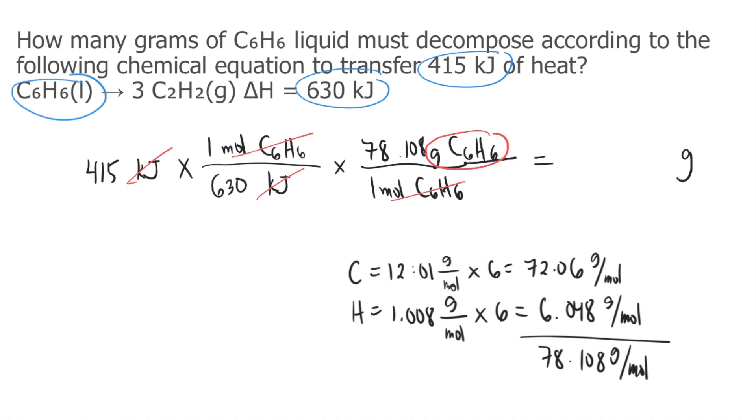Now all you have to do is solve this in your calculator. We have 415 times 1 divided by 630 times 78.108 divided by 1, and the answer is approximately 51.5 grams of C6H6. This is the answer to the question.